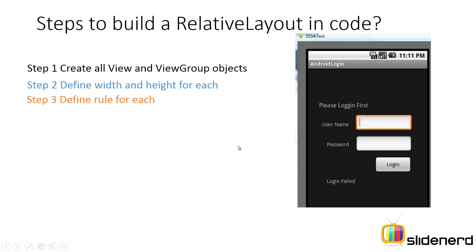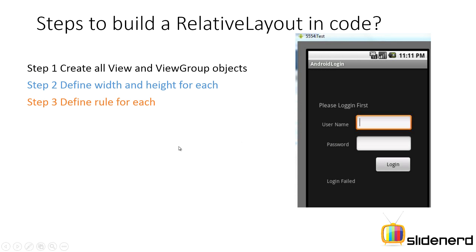Those dimensions need to be defined in the second step for each and every view and view group. In the third step, define the rule for each. Now this is a very special case — it applies only for a relative layout. Here you can see 'please log in first', and then username comes exactly below this, the edit text comes to the right of this, and another edit text comes below that. You can see the relationships between each view in terms of who comes where. That is what rules are all about, and all these rules are defined in the third step.